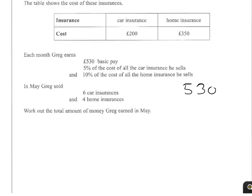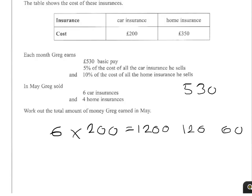Let's do the 6 car insurances first. Each car insurance gives £200, and he sells 6, so that's 6 times £200, which is £1,200. He gets 5% of £1,200. Well, 10% of £1,200 is £120, so 5% is £60. So Greg earns another £60 from his car insurance.